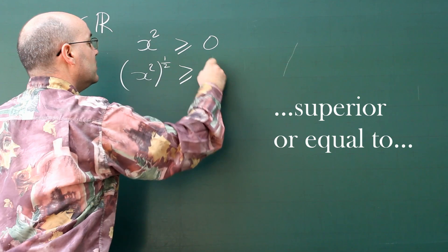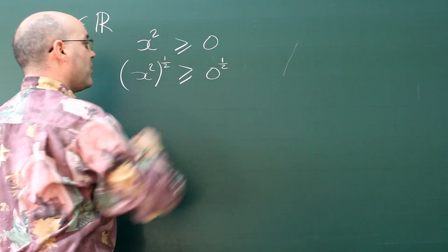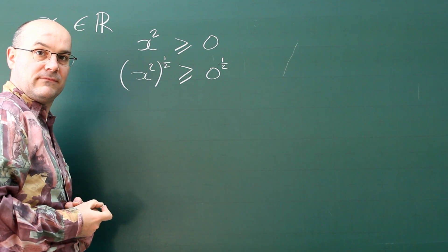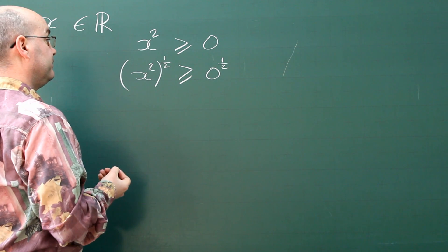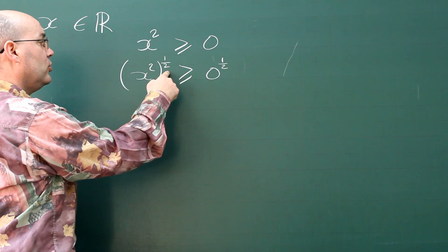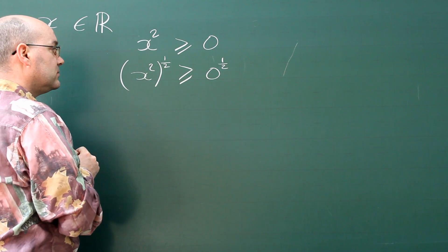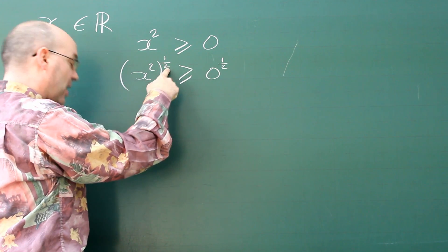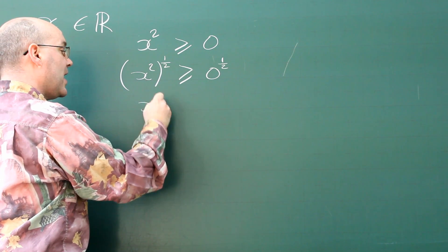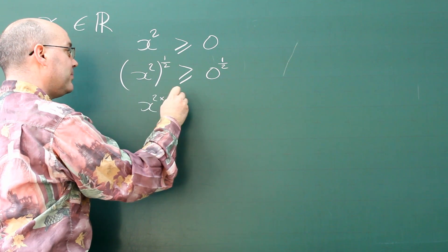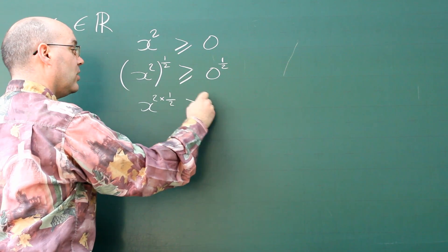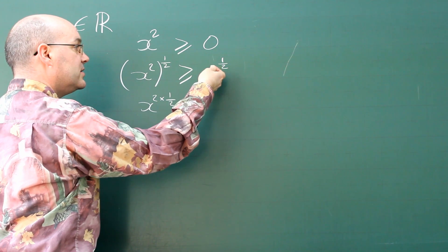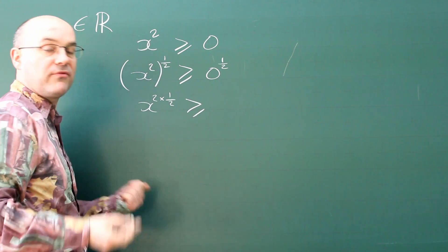Which is equal, of course, to zero to the power of the half. Now what do we have here? You know the rules for the powers. If you have one power to another power, it's actually the same as if you multiply them. And of course, on the other side, zero to the power of the half, or the square root of zero, is zero.